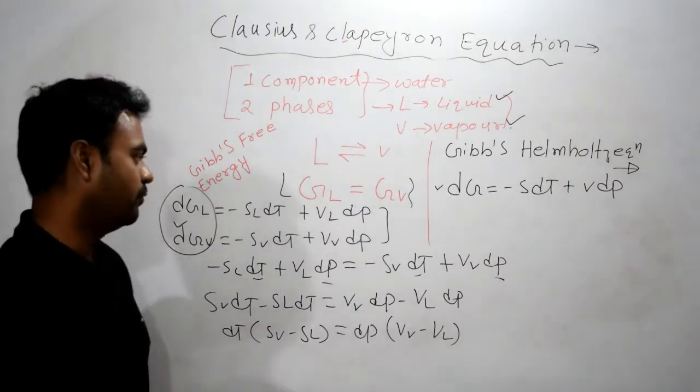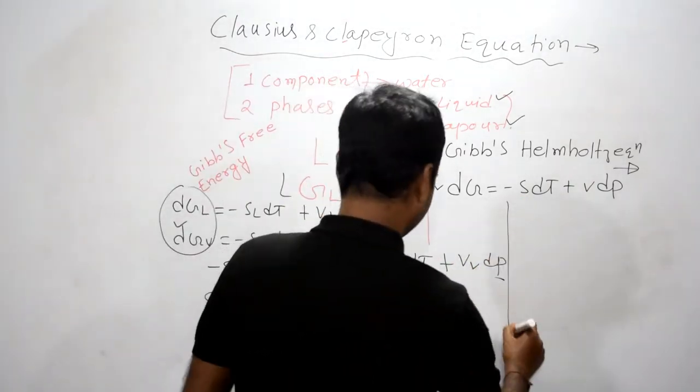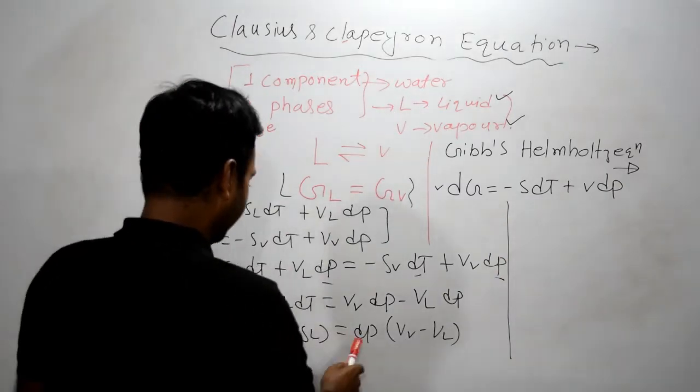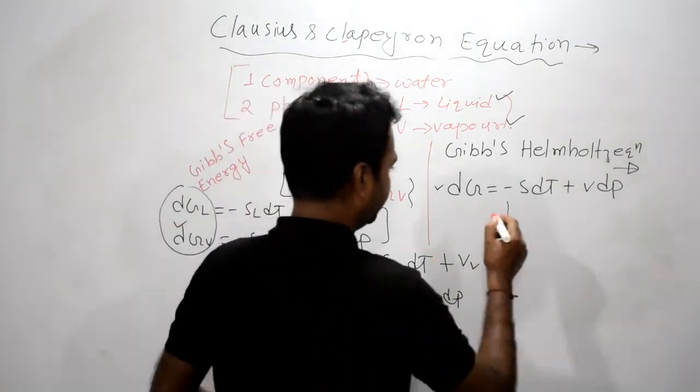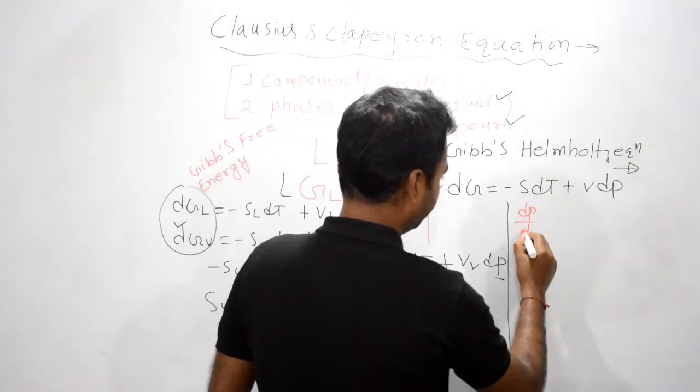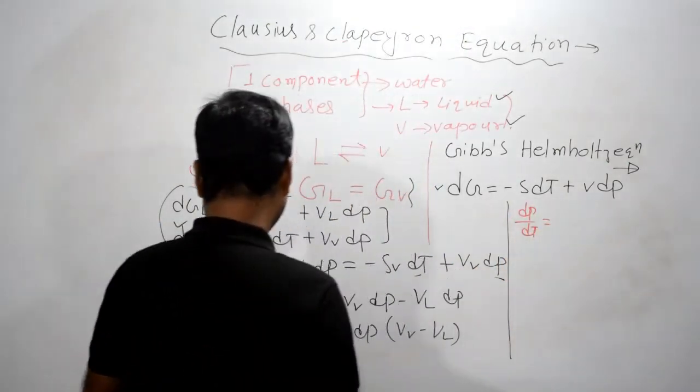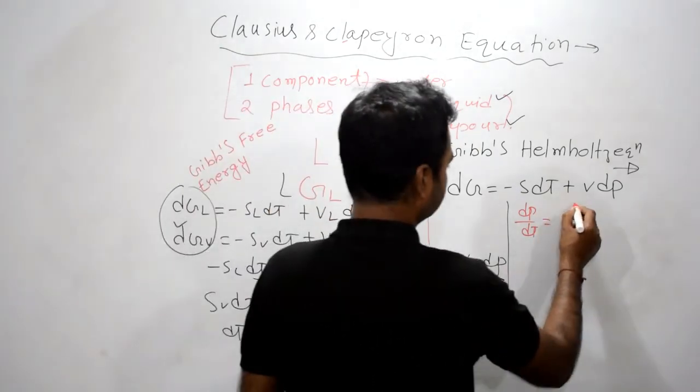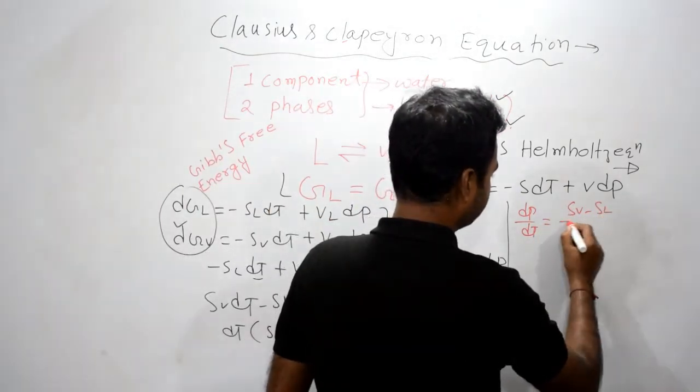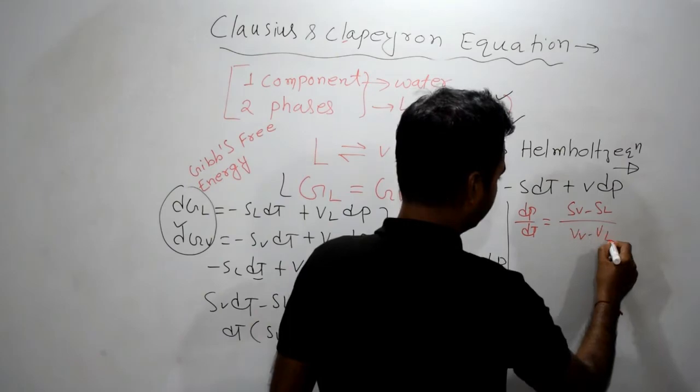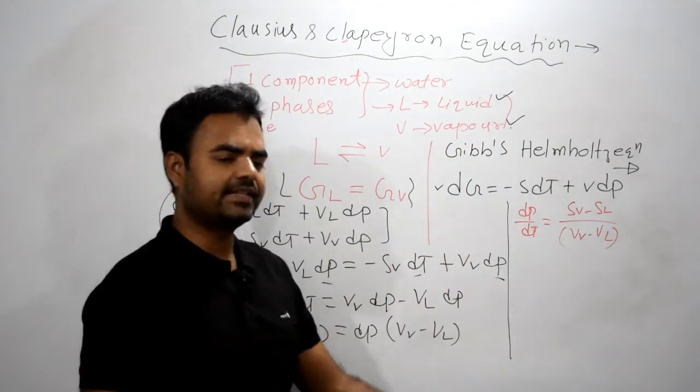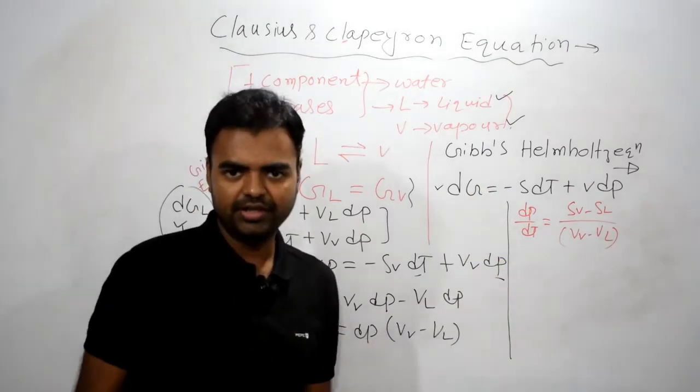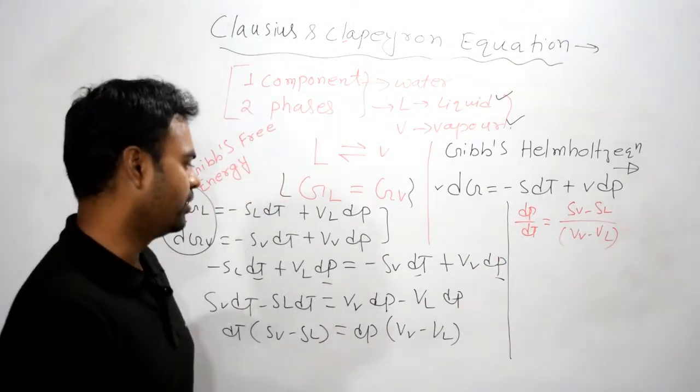Now very important, just stay tuned and put your focus here. We can shift this term to the other side so we can write dP/dT, which is the required term, equals (SV minus SL) divided by (VV minus VL). Now another thing we should remember for the next step to get the desired result.